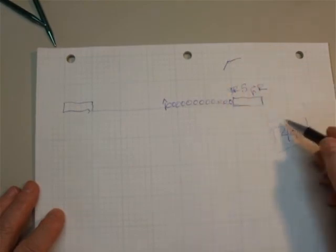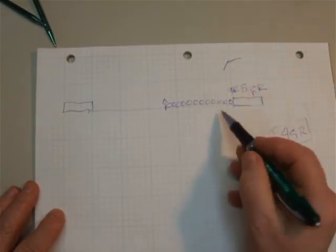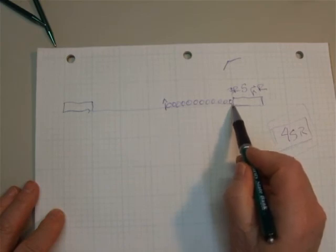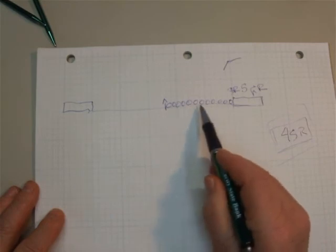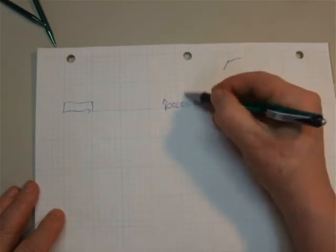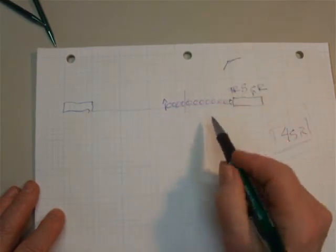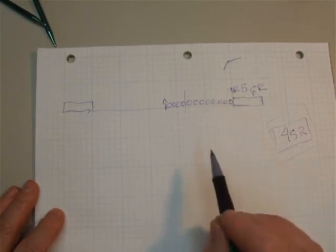So what we need to do is we need to take this four short row turns and we need to divide them evenly into our eight stitches here. So here we go.